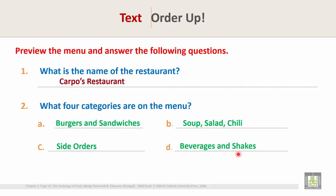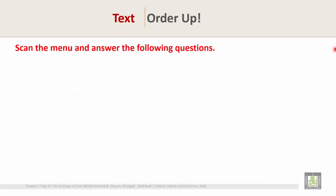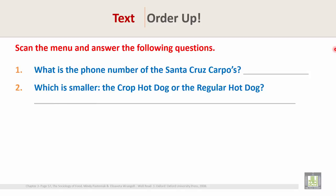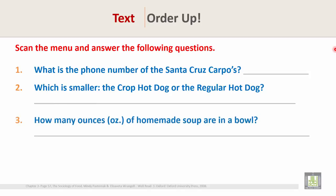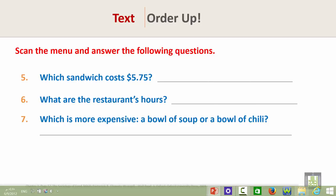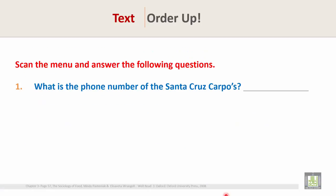Now scan the menu for the answers to the following questions. Question 1: What is the phone number of the Santa Cruz Karpos? Question 2: Which is smaller, the Karpos hot dog or the regular hot dog? Question 3: How many ounces of homemade soup are in a bowl? Question 4: How much does the salad bar cost? Question 5: Which sandwich costs $5.75? Question 6: What are the restaurant's hours? Question 7: Which is more expensive, a bowl of soup or a bowl of chili? Question 8: Does the restaurant sell french fries?